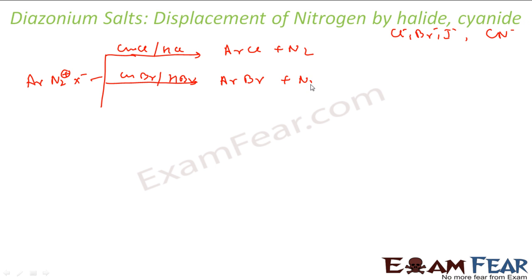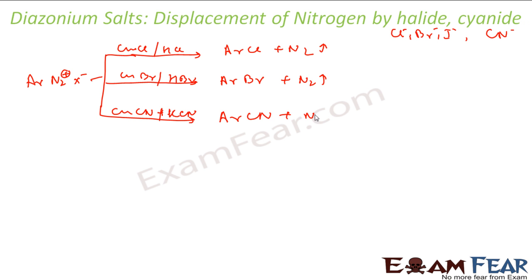Similarly, if I want the cyanide substitution, I will react the diazonium salt with CuCN and KCN. What I will get is ArCN and N2 gas goes off. So here, what I am using is Cu with +1 charge — that is Cu(I) ion — and the halogen acid. This reaction is called the Sandmeyer reaction.